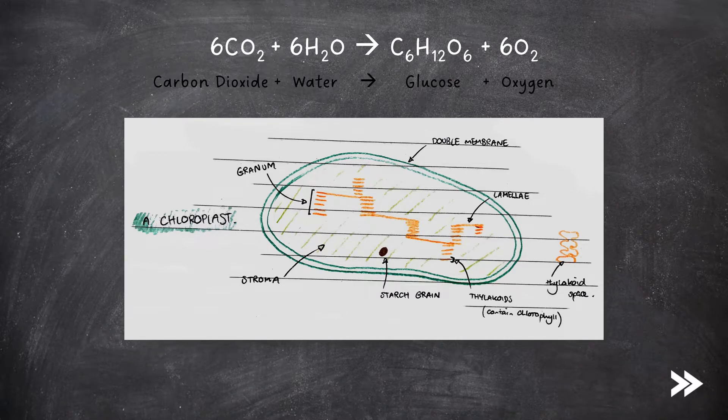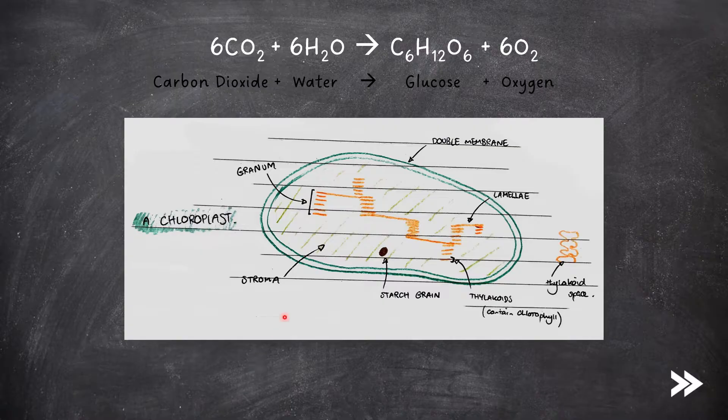Photosynthesis takes place in the chloroplast, and just to recap the structure of a chloroplast, it is surrounded by a double membrane. Inside of the chloroplast we have a thick fluid called the stroma, as well as a membrane called a thylakoid membrane, which folds into stacks called grana, of which the singular by the way is known as a granum. Grana are linked by lamellae, which are thin, flattened pieces of thylakoid membrane. To recap cell structure and organelles, just follow the link top right.